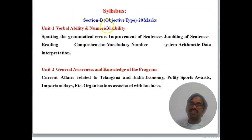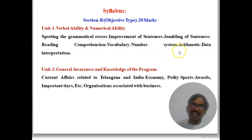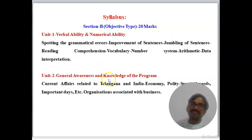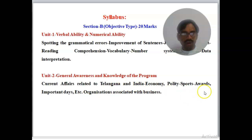Section B is general awareness with two units. Unit 1 is verbal and numerical ability: spotting grammatical errors, improving sentences, jumbling of sentences, reading comprehension, vocabulary, number system, arithmetic, and data interpretation. Unit 2 is general awareness: current affairs related to Telangana State, Indian economy, political sports, awards, important dates, and organizations associated with business.